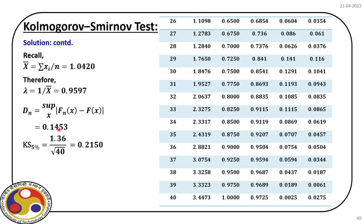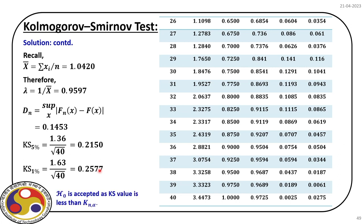Based on the data, we first set the null hypothesis that the population follows exponential distribution, find the parameters, segregate the data, and compute the empirical distribution and the proposed CDF. The KS statistic Dₙ turns out to be 0.1453. The critical values from the KS table are: 0.2150 for 5% and 0.2577 for 1%. Since 0.1453 is less than both critical values, the null hypothesis is accepted — confirming the exponential distribution, consistent with our earlier chi-square test conclusion.